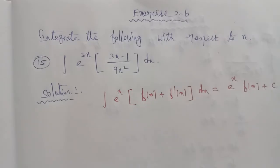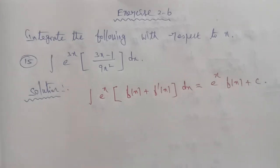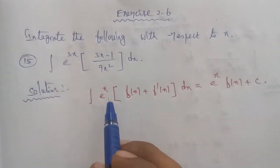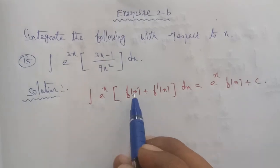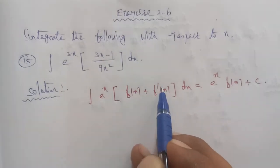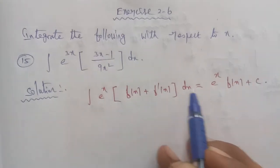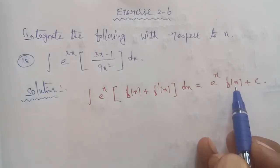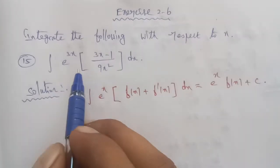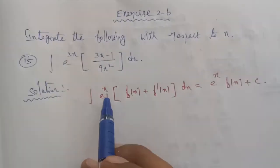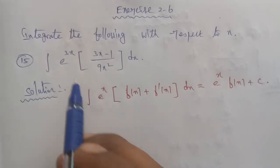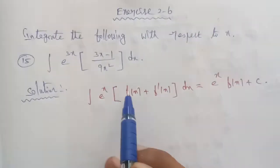To apply this formula to the given question, from the formula we have e power x, but in the given question we have e power 3x. So the exponent is 3x instead of x, which means we need to adapt the formula accordingly.